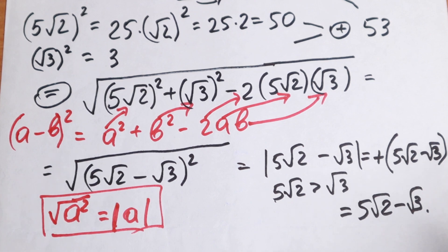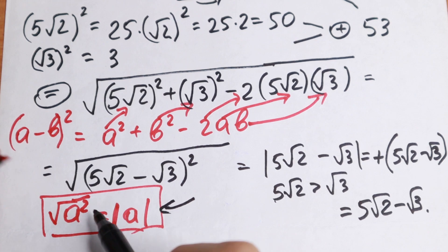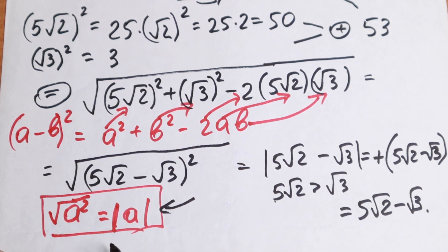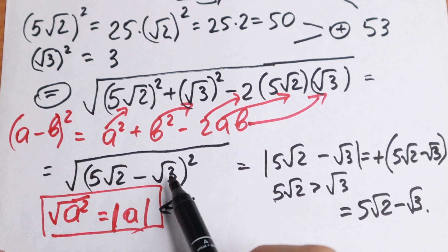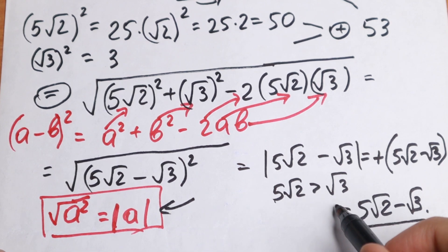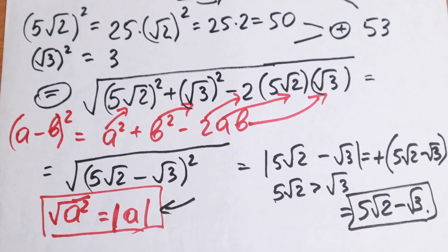Our final answer is 5√2 minus √3. You need to learn and remember this rule, because if we had √(3 - 5√2)² or similar cases, we must use absolute value. So this is our answer — a really interesting algebra problem. If you enjoyed it, put your thumbs up. Thank you so much for watching and see you in the next videos.